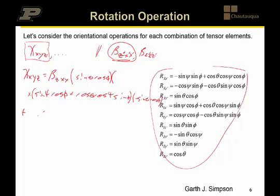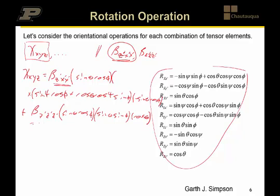We also have contributions from beta_zzz. There should be primes on these indices as well. For this term, x onto z gives sine-theta cosine-phi, y onto z gives sine-theta sine-phi, and z onto z gives cosine-theta. That is the mapping — not an orientational average, because this is a delta-function orientation distribution, which is the beauty of a crystal — connecting the molecular response to the crystal frame. This allows us to predict the nonlinear optical properties of the crystal with knowledge of the molecular frame response and the packing inside the lattice.